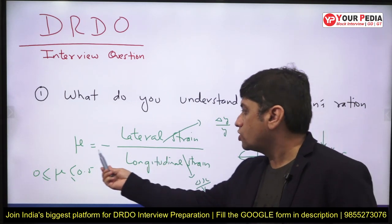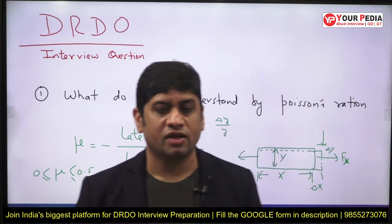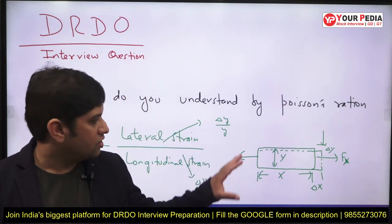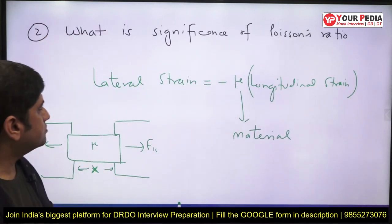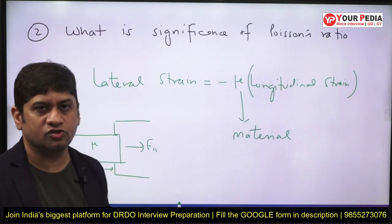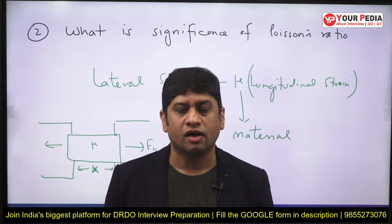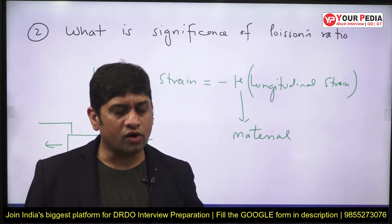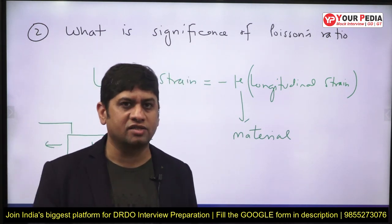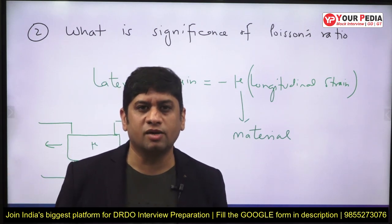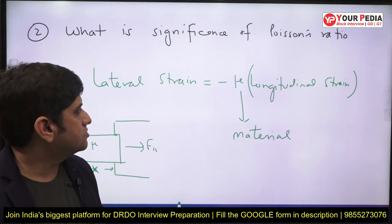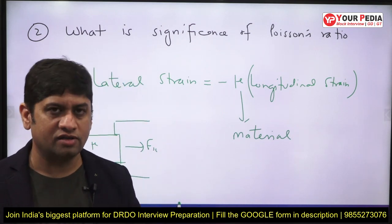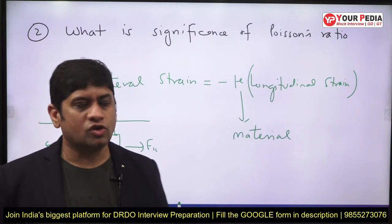The clarity with which you explain this will decide how good your interview is. Once you have answered, they go next: 'What is the significance of Poisson's ratio — why do you calculate it?' We calculate Poisson's ratio to calculate the lateral strain, because for a particular material Poisson's ratio is fixed — it is a property of the material. For example, for steel, Poisson's ratio is 0.25 to 0.3.